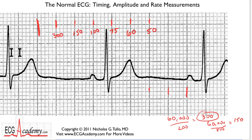If you just remember this sequence — does it make sense? Sure! If the beats are five boxes apart, that's 60 beats per minute. Well, five boxes equals one second, and there are 60 seconds in a minute, so it all makes sense. Just remember: 300, 150, 100, 75, 60, 50.